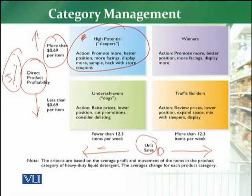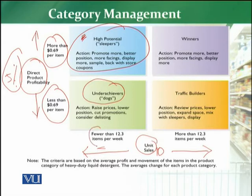From another perspective, we have the underachiever category, also known as the dog category. For these categories, profitability is less than average and sales are also less than average. So if both the sales and profitability are below average, it means these are underachiever or dog categories. The most visible action here is clear: you need to increase their prices so that you can improve the margin on them, and lower their positioning.